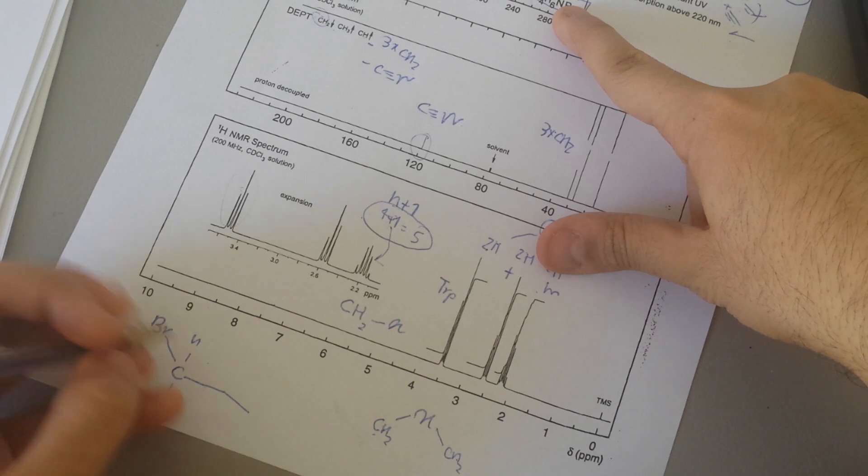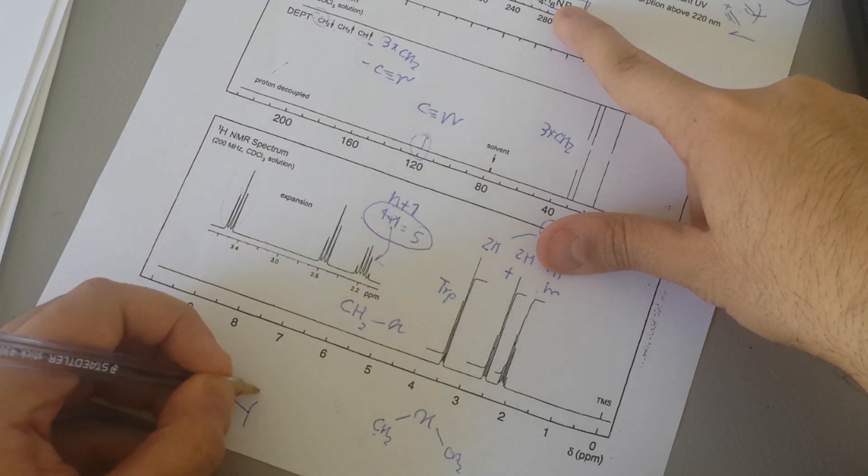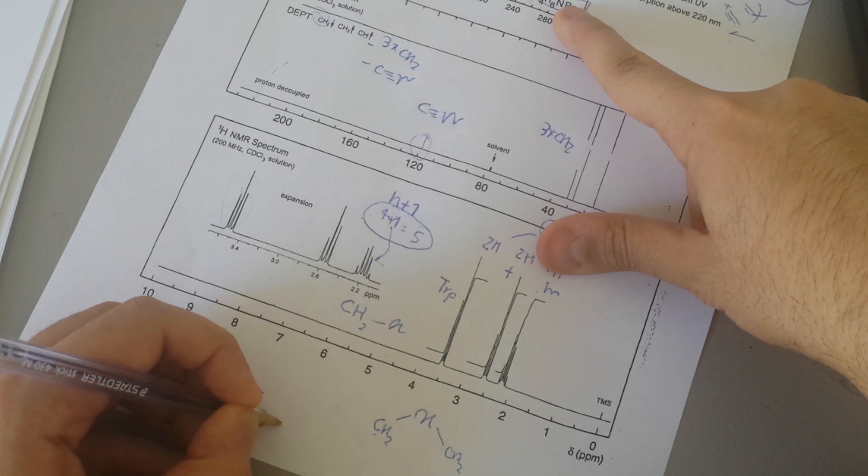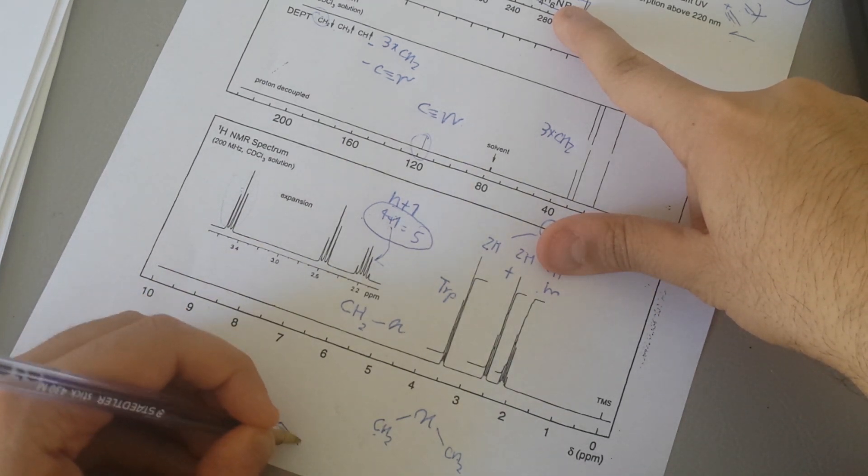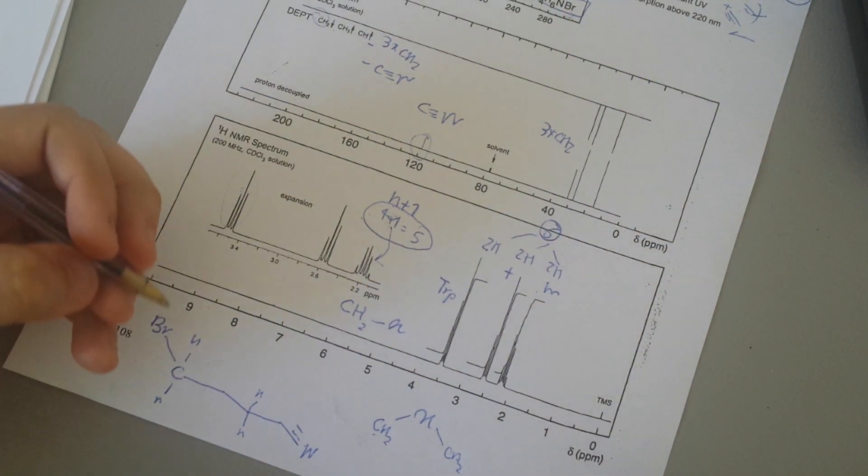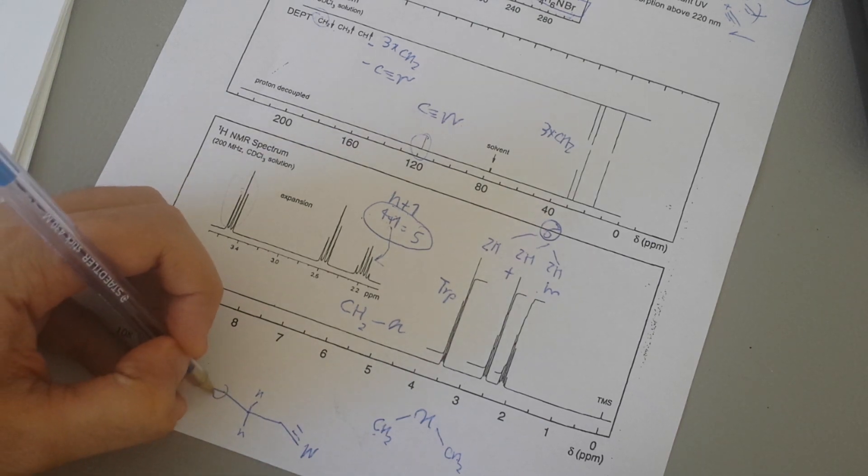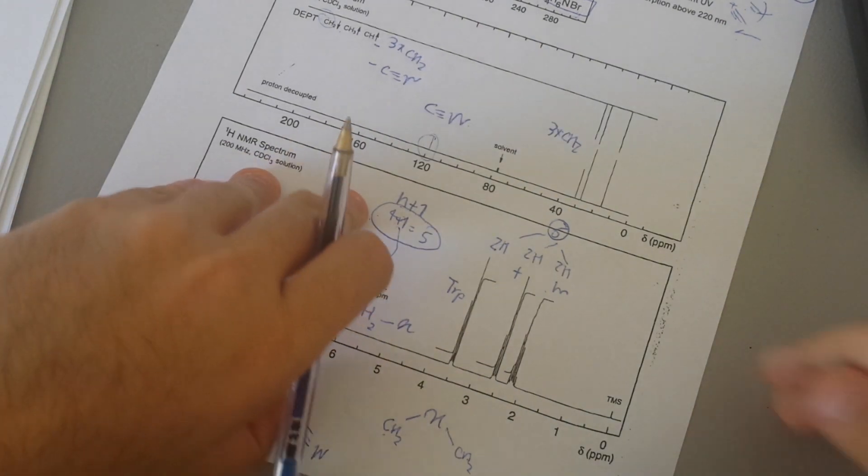You must have one carbon here. That gives us two hydrogen, right? Two hydrogens. Does it make sense? So what it means is that we have two neighboring hydrogens. Two neighboring hydrogens, so this is, let me make it a better one here.